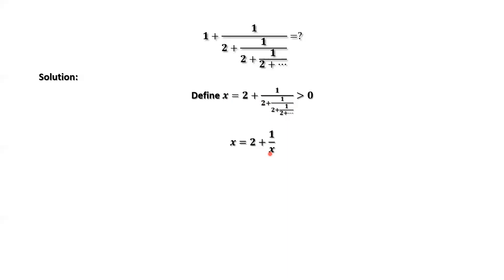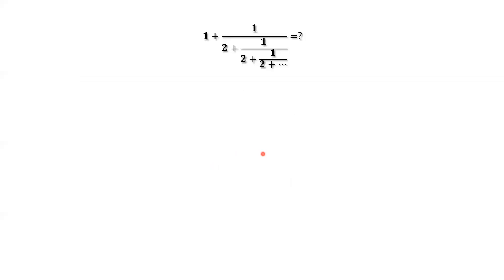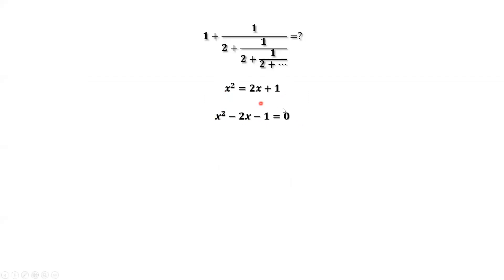Multiply both sides by x. We simplify and rearrange this equation. Then we have x squared minus 2x minus 1 equals 0. This is a quadratic equation.